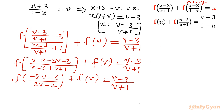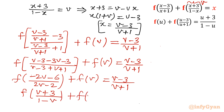Dividing the first function's argument by minus 2, it converts to f of (v plus 3) over (1 minus v). So: f of (v plus 3 over 1 minus v) plus f(v) equals (v minus 3) over (v plus 1). This is equation number 2.